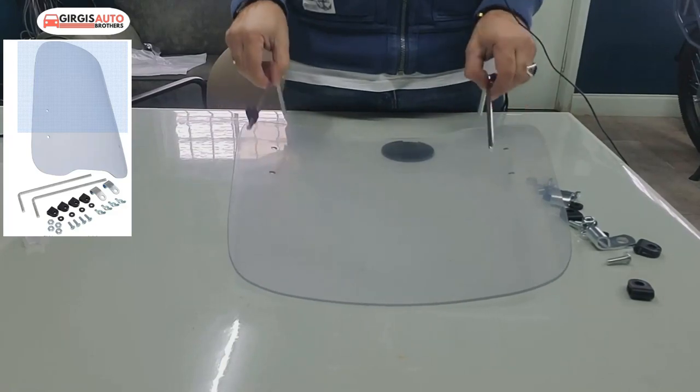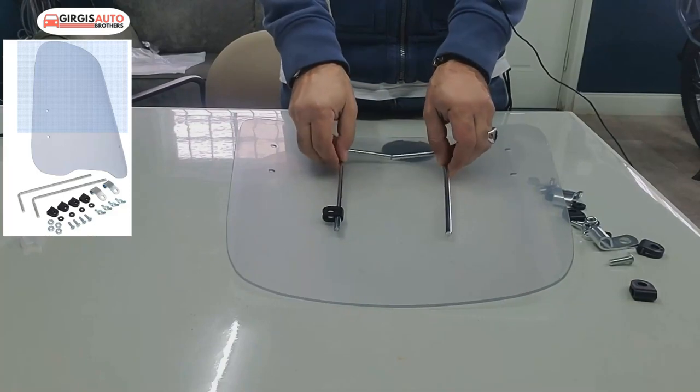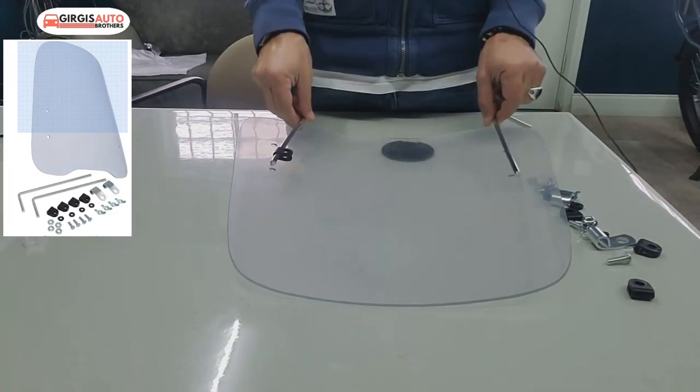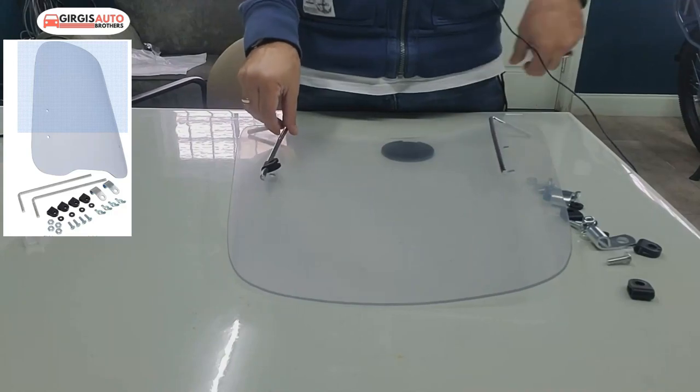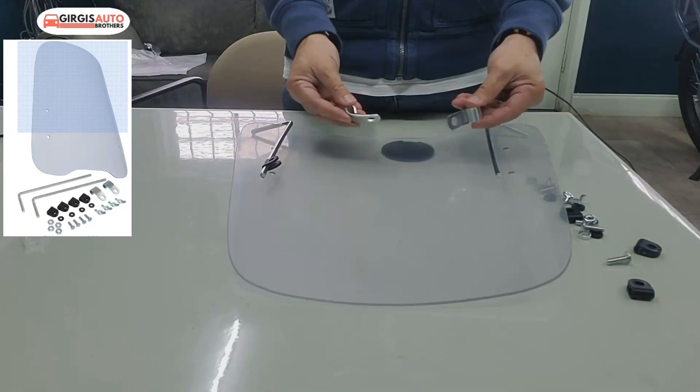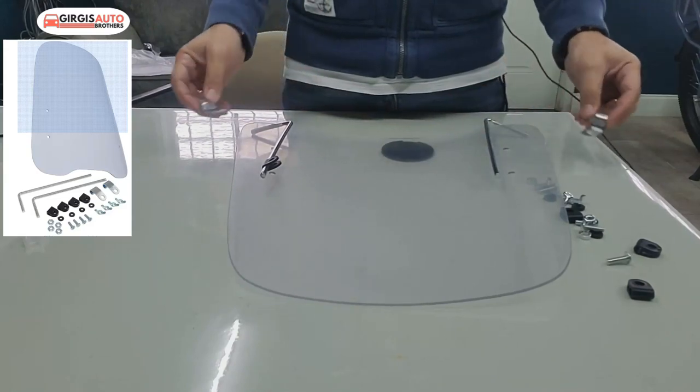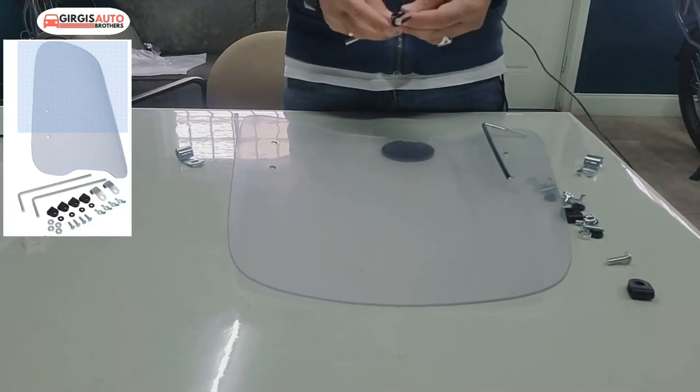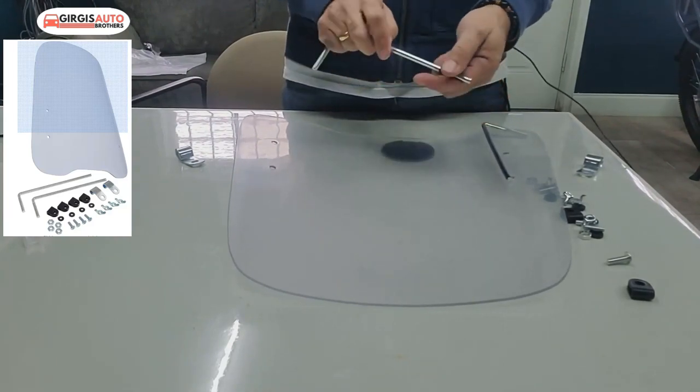One of the complaints about this windshield on Amazon was that it did not have any instructions. Basically you don't need instructions, it's quite simple. All you need to do is remove the mirror of the scooter, use those two brackets under the mirror, assemble this together which looks like this. You just put those tabs in here.